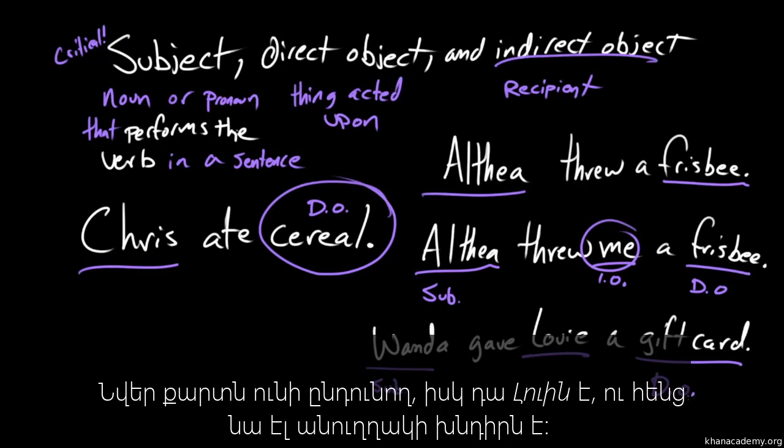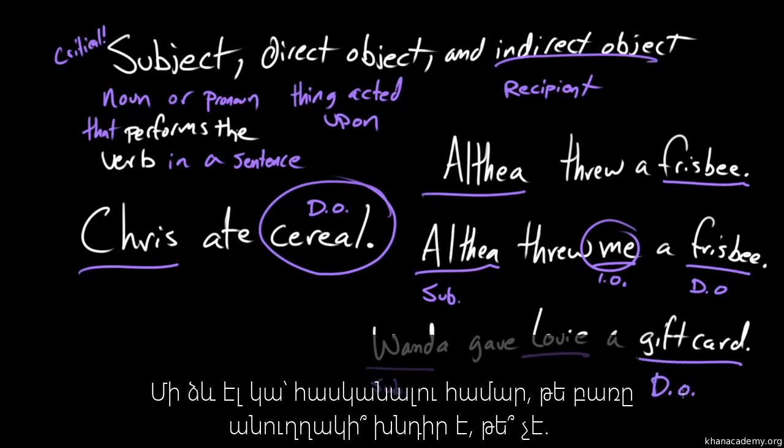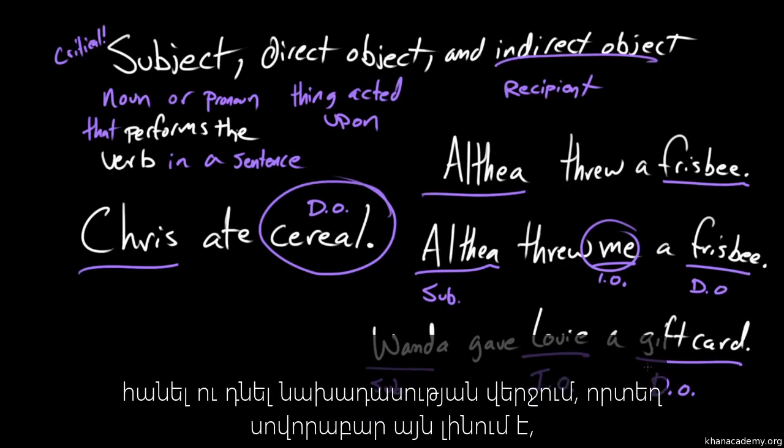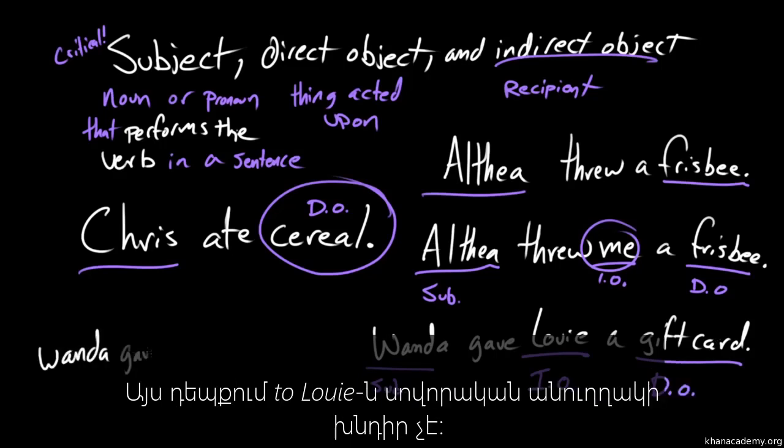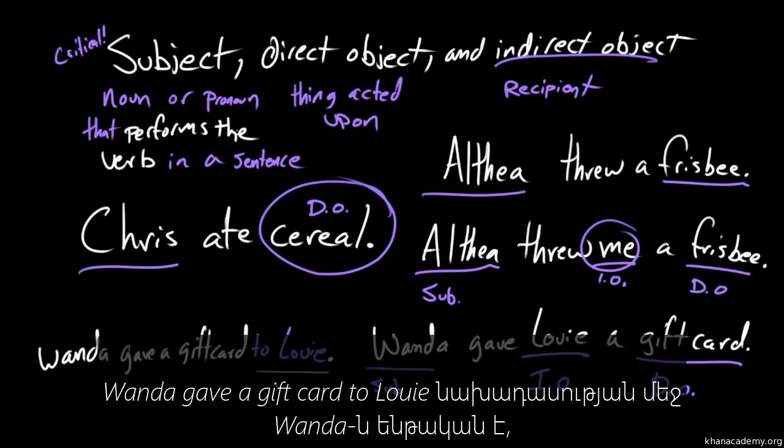I think another way to identify whether or not a word is the indirect object in a sentence is to see if you can pull it out and stick it on the end of the sentence as it currently stands with a preposition and see if it still makes sense. Right. So, in this case, to Louis is no longer what we would traditionally consider an indirect object.